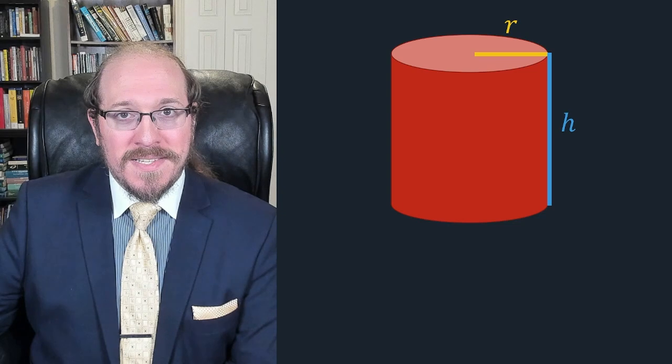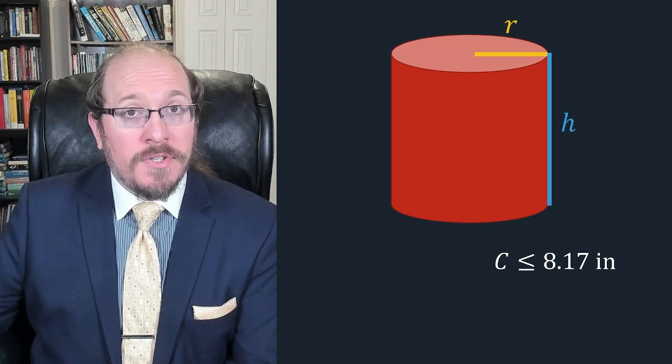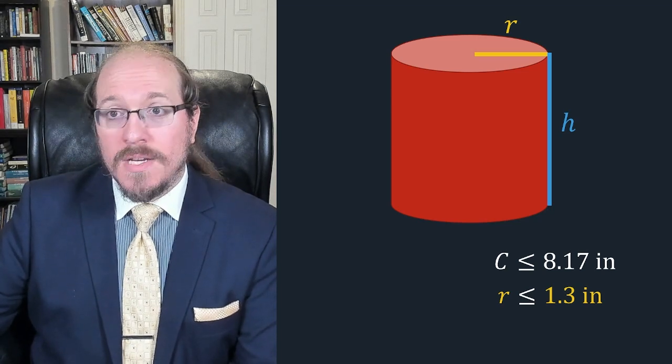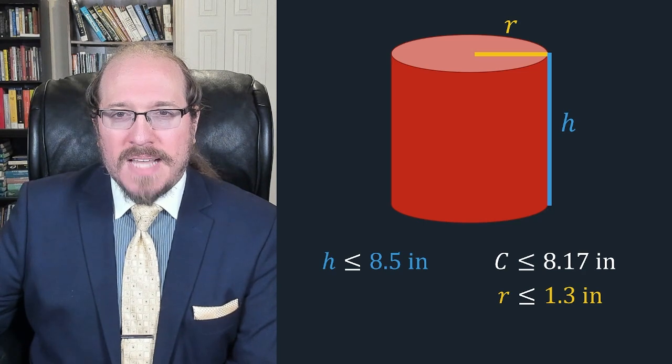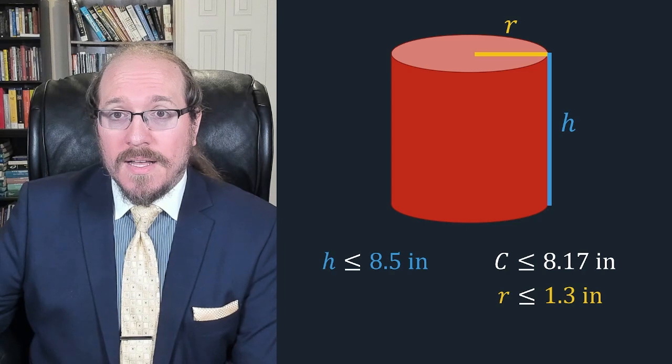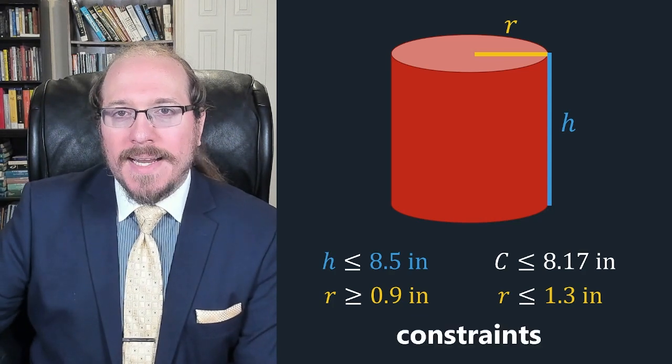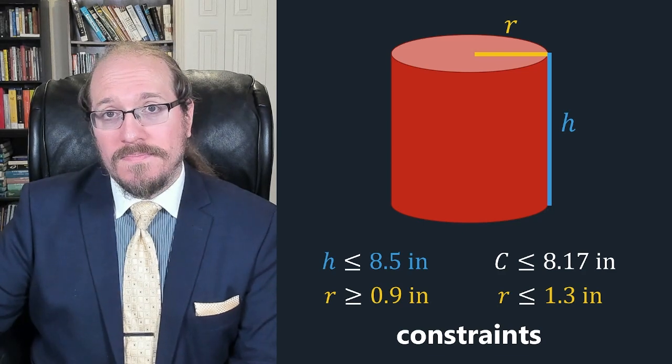So it turns out there's other factors soda companies take into consideration when making cans. Such as making sure you can hold it in one hand. Especially if you're a child. Make of that what you will. Anyway, suppose a soda company does a study and decides the circumference of a can shouldn't be any more than 8.17 inches. Since any bigger than that and it's too hard to hold. That corresponds with a radius of about 1.3 inches. If you use the formula circumference equals 2π times the radius. Let's also assume that they found the can shouldn't be any taller than say eight and a half inches. Because that might make it hard to package or something like that. Using our volume from earlier, that means the radius of the can has to be at least 0.9 inches. We now have constraints on what the radius is allowed to be. That radius now has to fall within a closed interval.